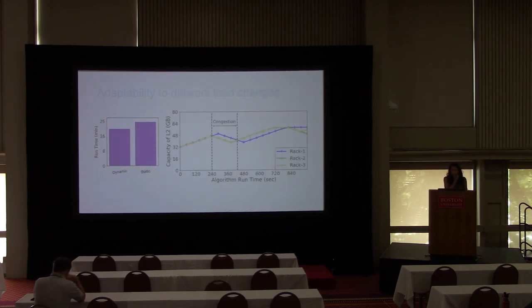We also looked at the adaptability to network load changes. In this experiment, we put congestion on the network on one of the racks which tied the other requests. Because that rack has a limited or congested network, the other racks also get impacted. During that congestion window, because accessing layer 2 becomes expensive for at least one rack, we observed that all the racks start increasing their layer 1 capacity. That was the goal of this experiment.